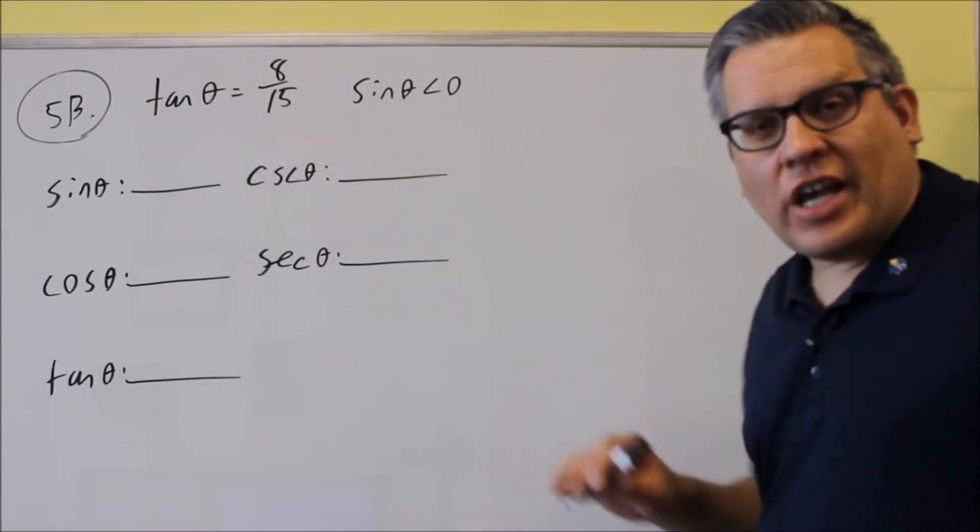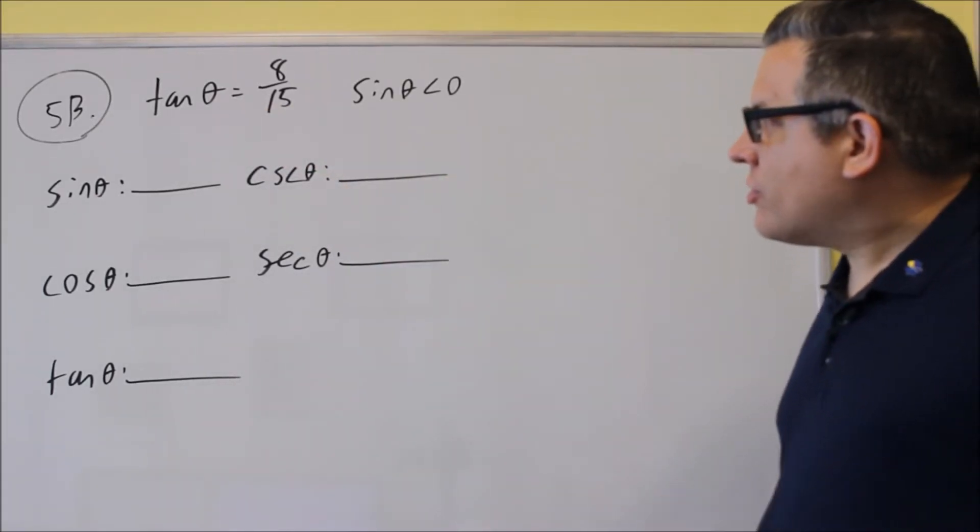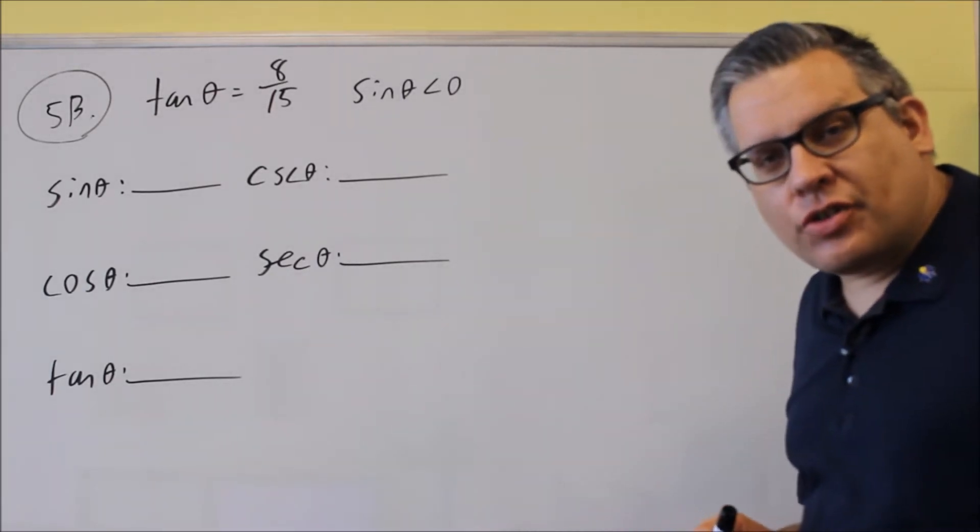Okay, 5B. They give us tangent is equal to 8/15, but it tells us that sine is less than zero.